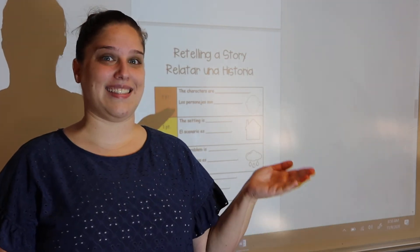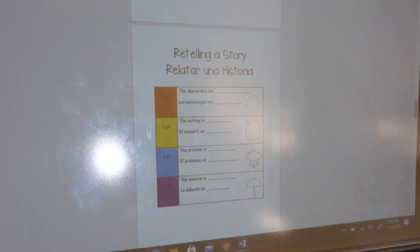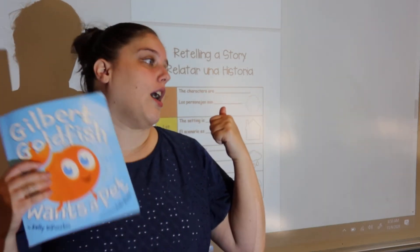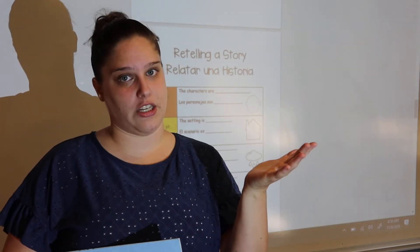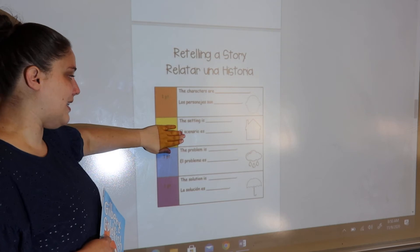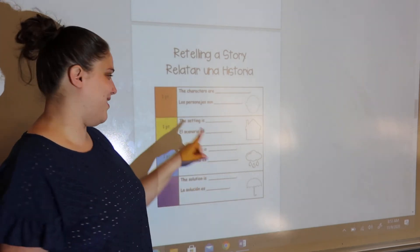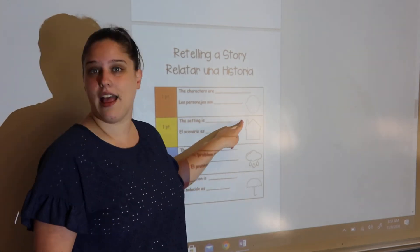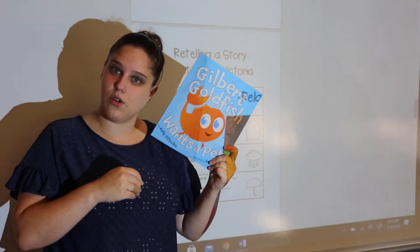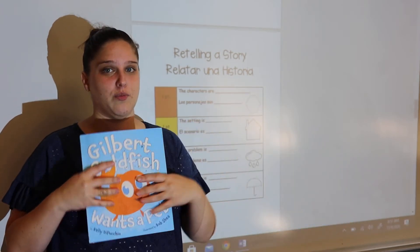For example, if we were talking about Gilbert Goldfish, we would say: the characters are Gilbert, the fly, the mouse, the dog, and the catfish. That's how we would explain this part of the story. Then the next sentence when retelling is going to be about the setting. We're going to say and write 'The setting is,' and talk about the setting. We would say the setting is in Gilbert's fishbowl and in the house, because Gilbert doesn't go outside in our story — he stays in his fishbowl inside the house.